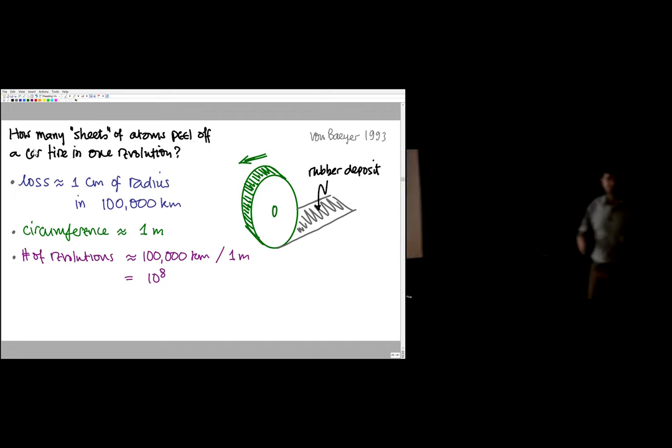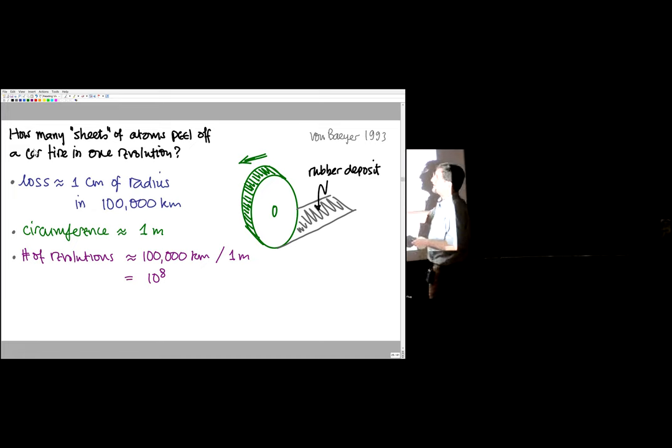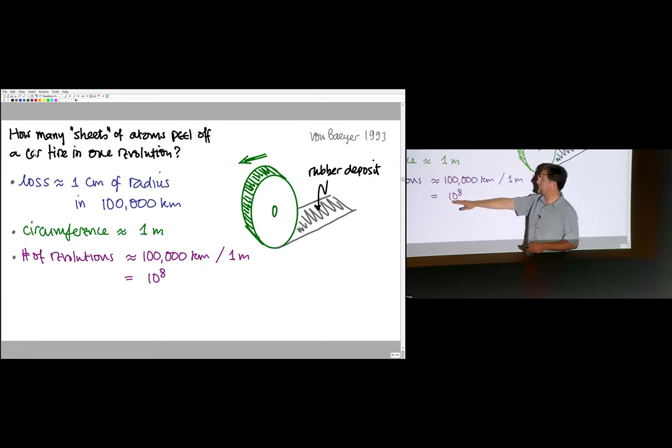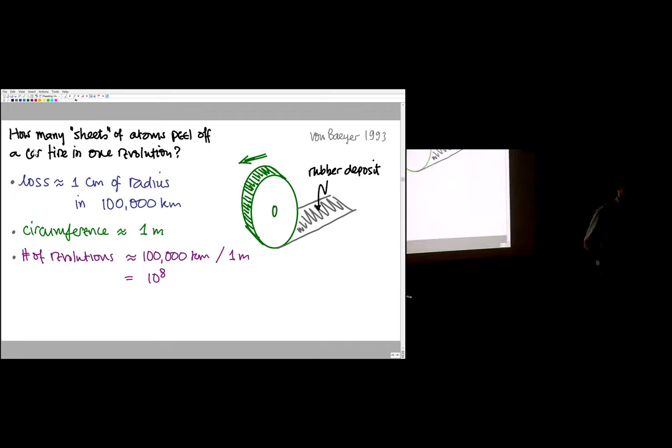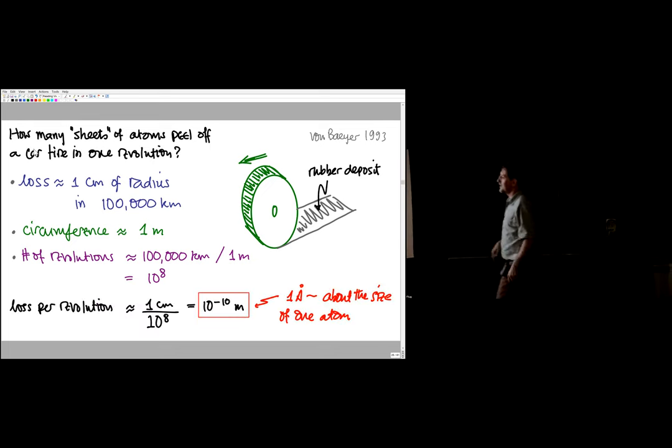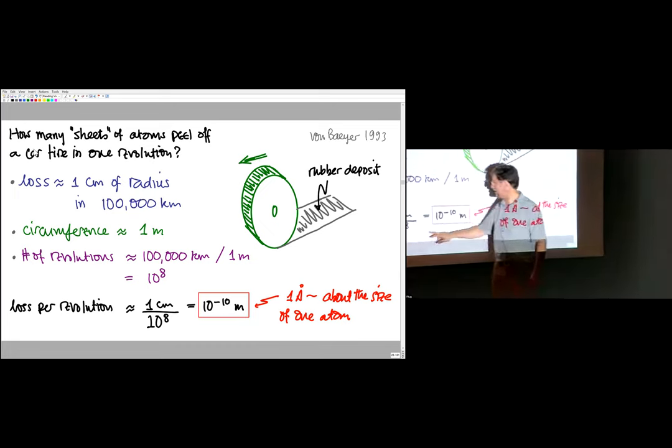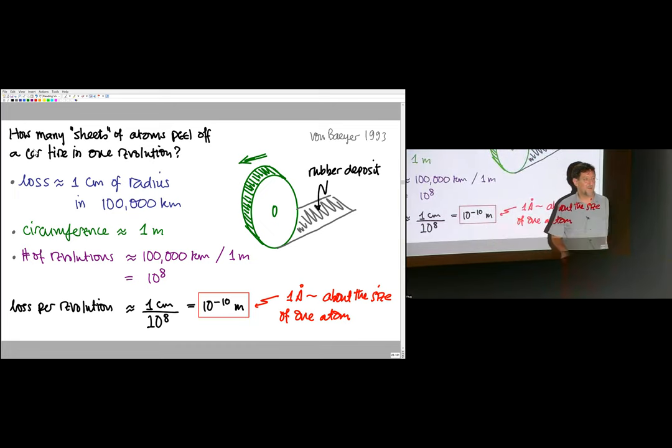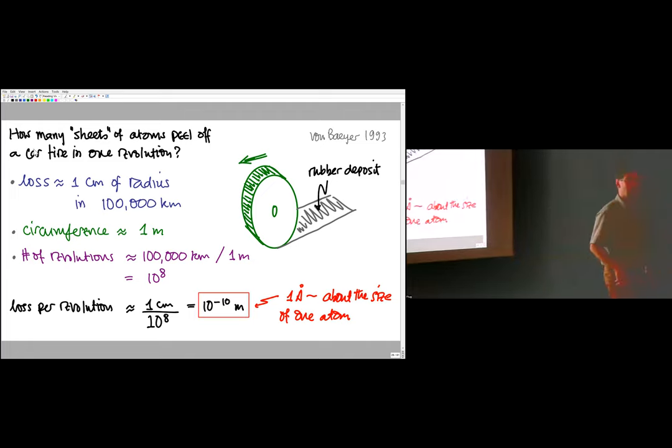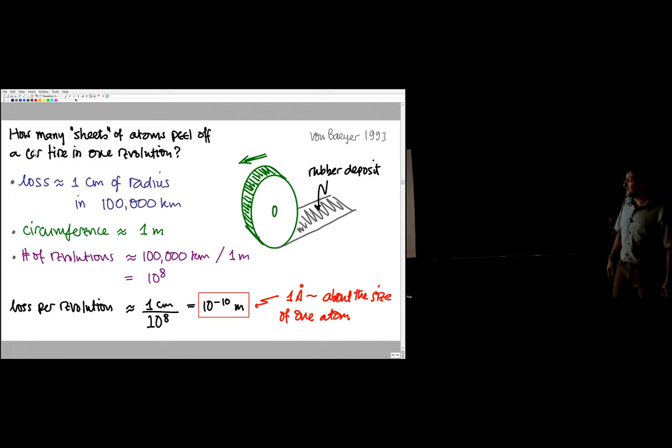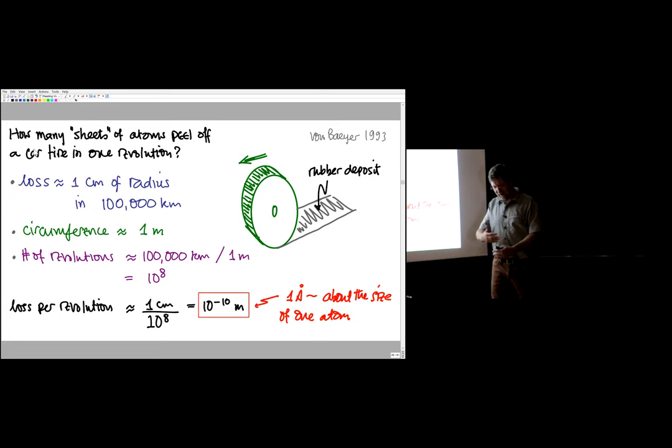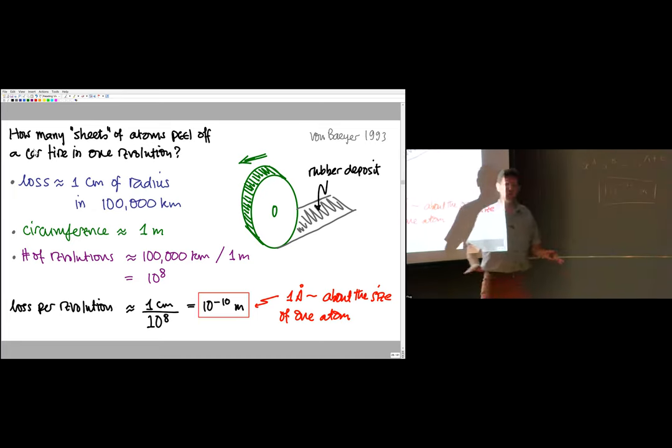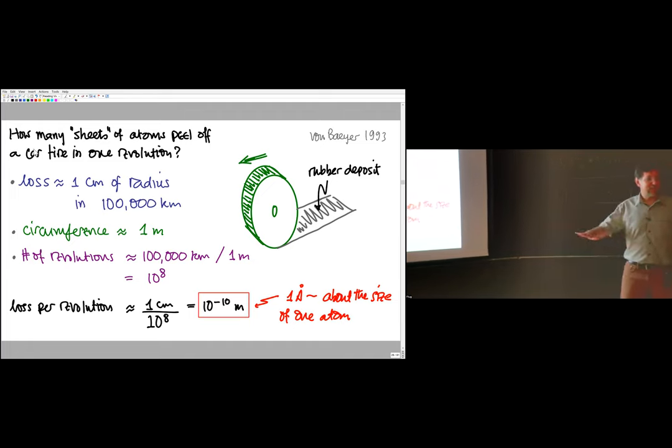During that time, we agreed that it lost about a centimeter. If it loses a centimeter over this number of revolutions, it loses—100 million—it loses a millionth of a centimeter every time it goes round, roughly. So how big is that number? A centimeter divided by 100 million is 10 to the minus 10 meters. And I said at the beginning that all atoms are roughly 10 to the minus 10 meters. And so it seems that every time a car tire goes round, it kind of just leaves the minimum it can without leaving nothing, namely a kind of sheet of atoms.